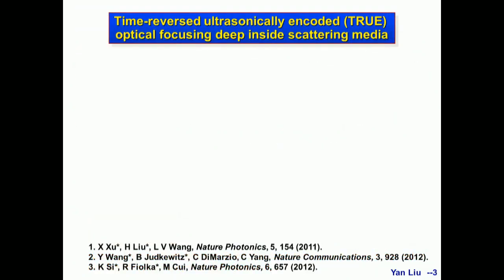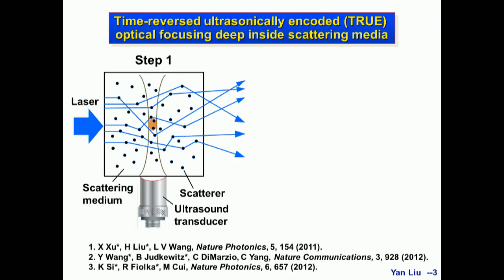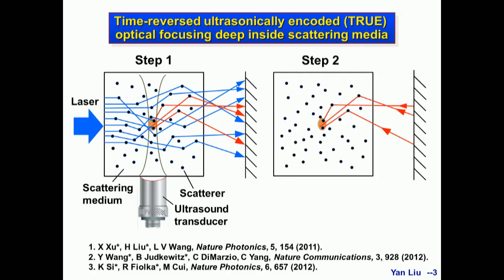To do this, our lab and others developed time-reversed ultrasonic encoded optical focusing, or TRUE focusing, to focus light deep inside scattered media. Ultrasound is much less scattered in tissue due to its long wavelengths, so we first focus ultrasound to a small volume deep inside the scattered media. Then we illuminate a laser beam. Light will be scattered, but a portion passing through the ultrasound focus will change its frequency due to momentum transferred from the ultrasound. These frequency-shifted photons, shown in red, are called ultrasound tagged photons. If we detect only these photons and do a time reversal, they will trace their trajectory back to the ultrasound focus to form a focus despite scattering.